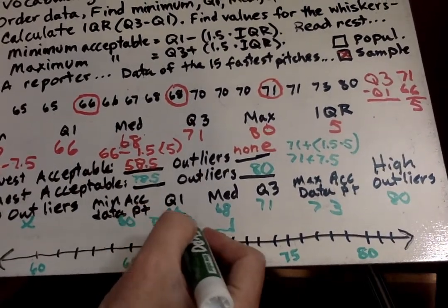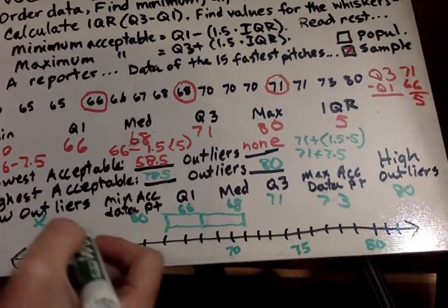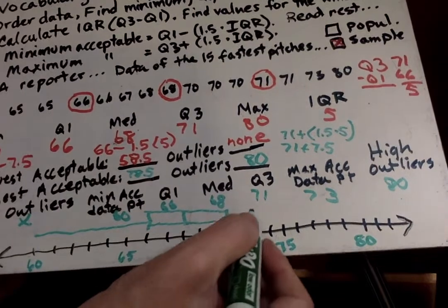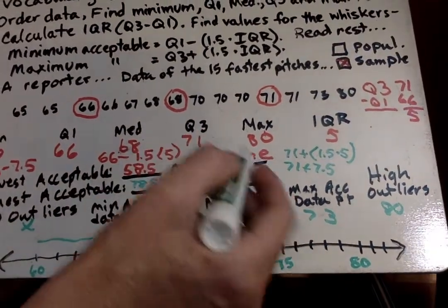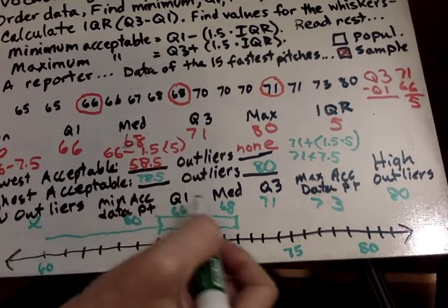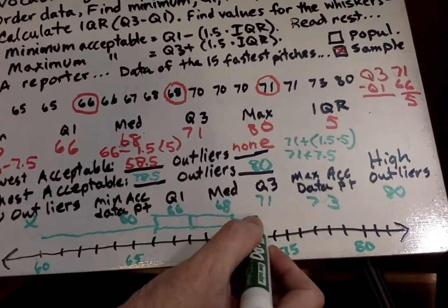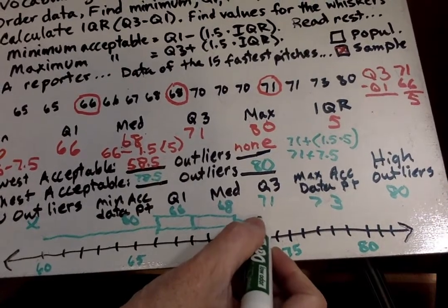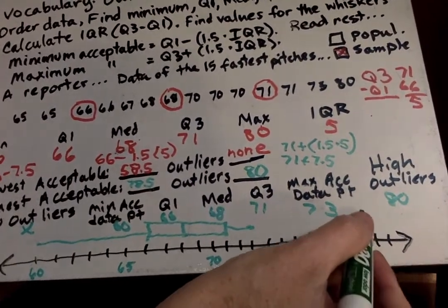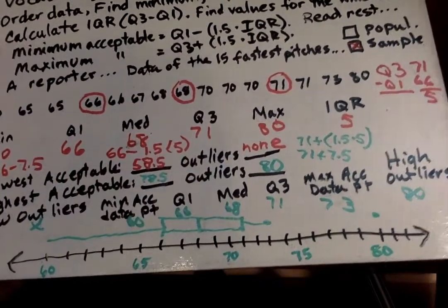My whisker is going to go down to my minimum, which here the minimum is going to be 60. And that's acceptable. My maximum up here, we can't go beyond our highest acceptable. So we're going to go up to 73. And then for the outlier, we put a dot by itself. So it's right over there. We don't connect it to it because it's an outlier like that.